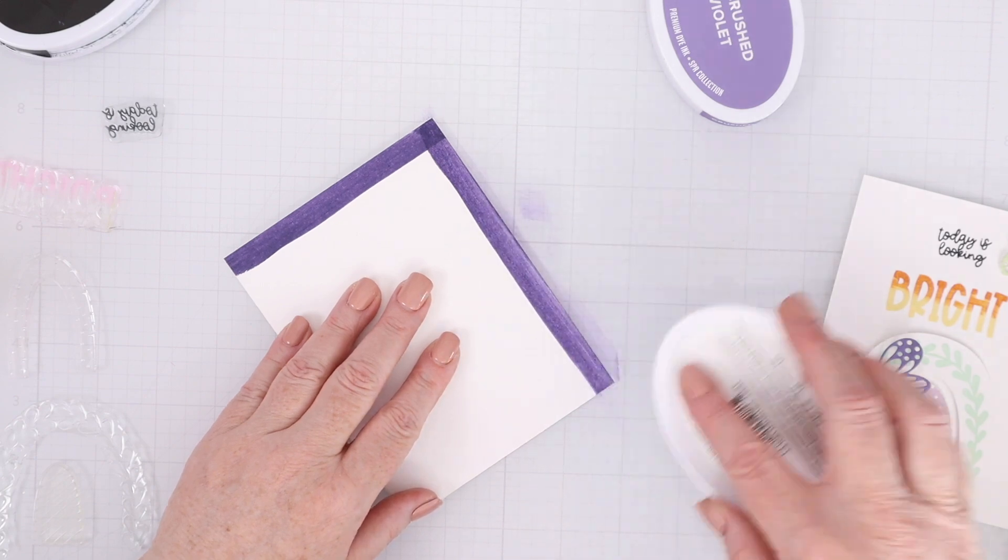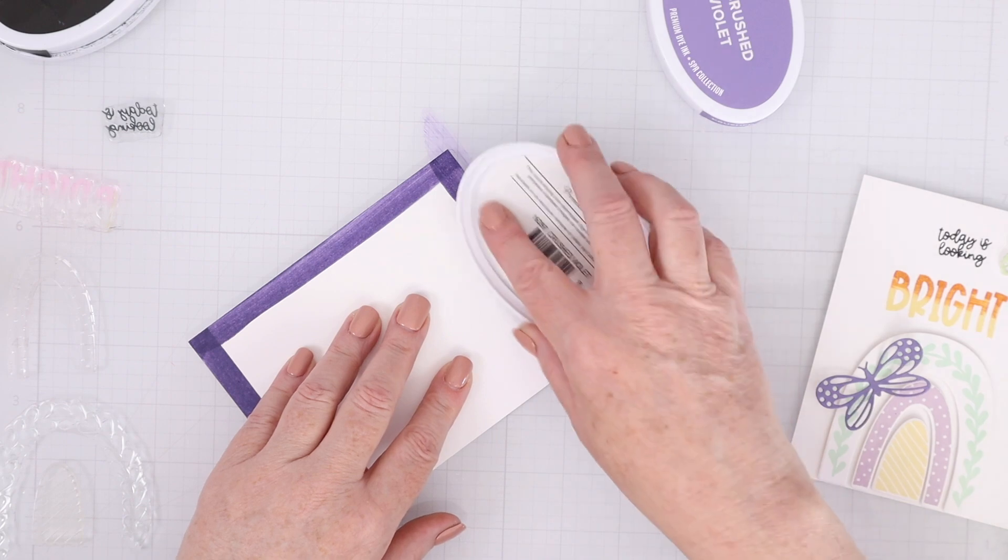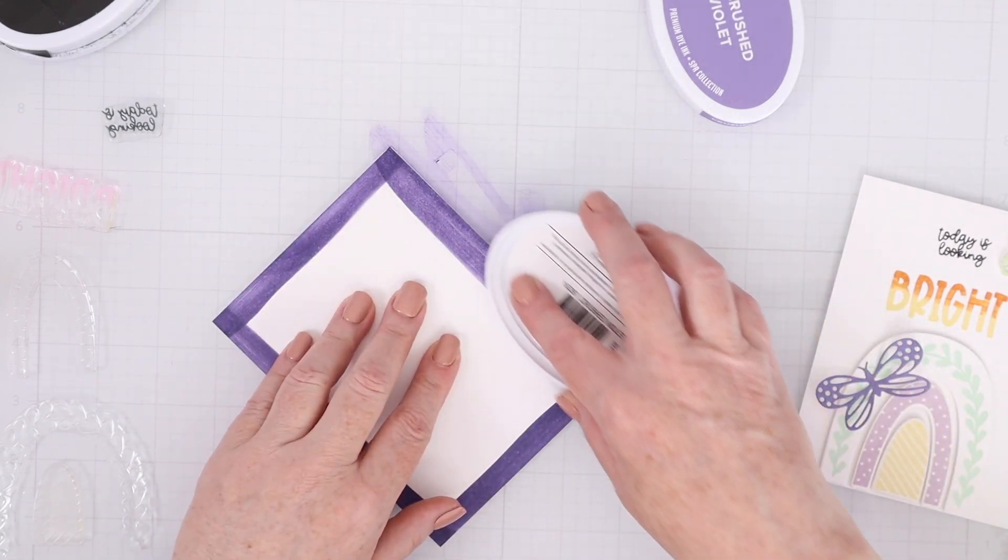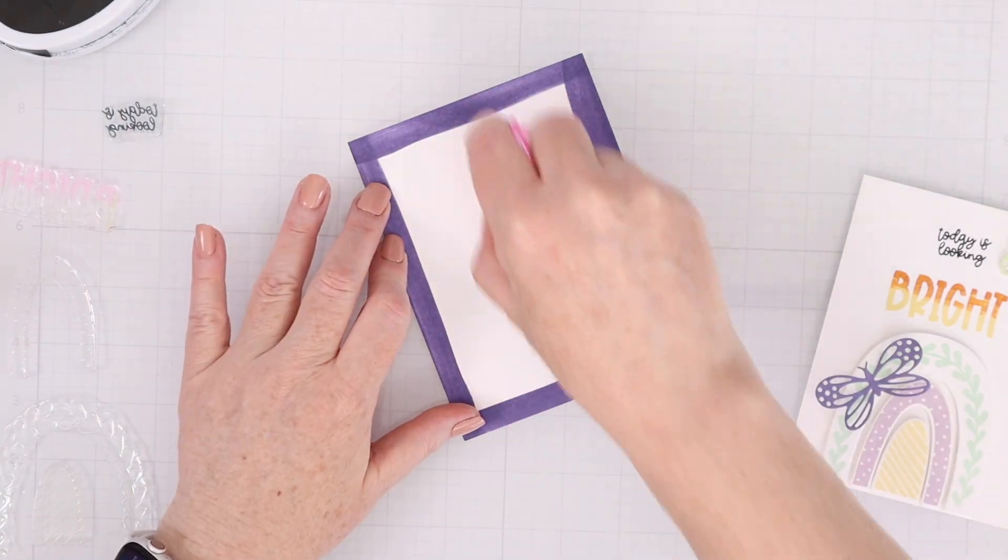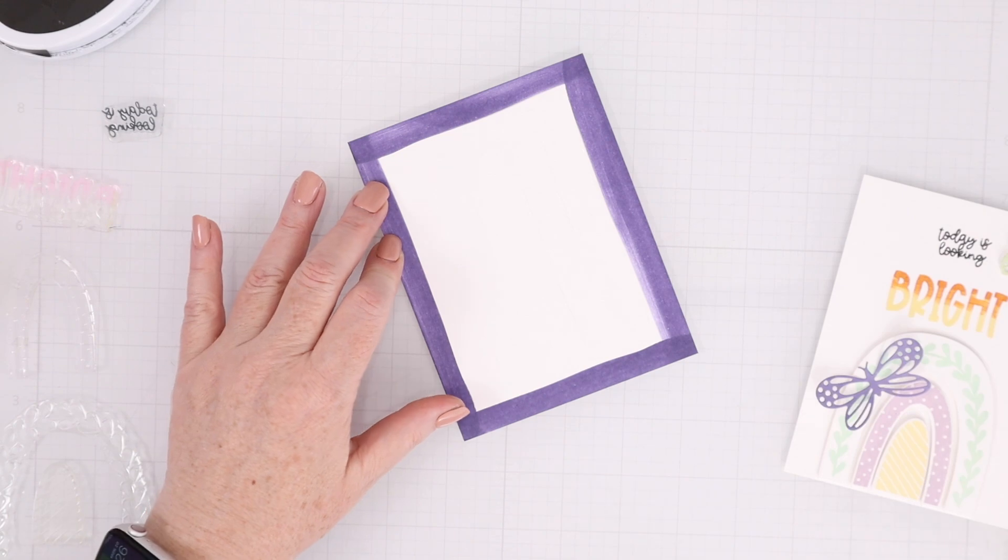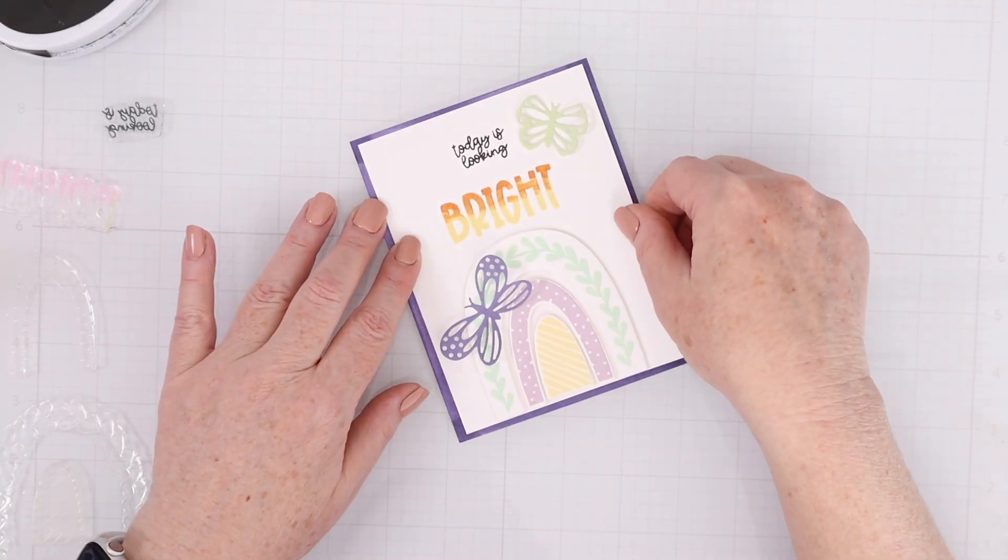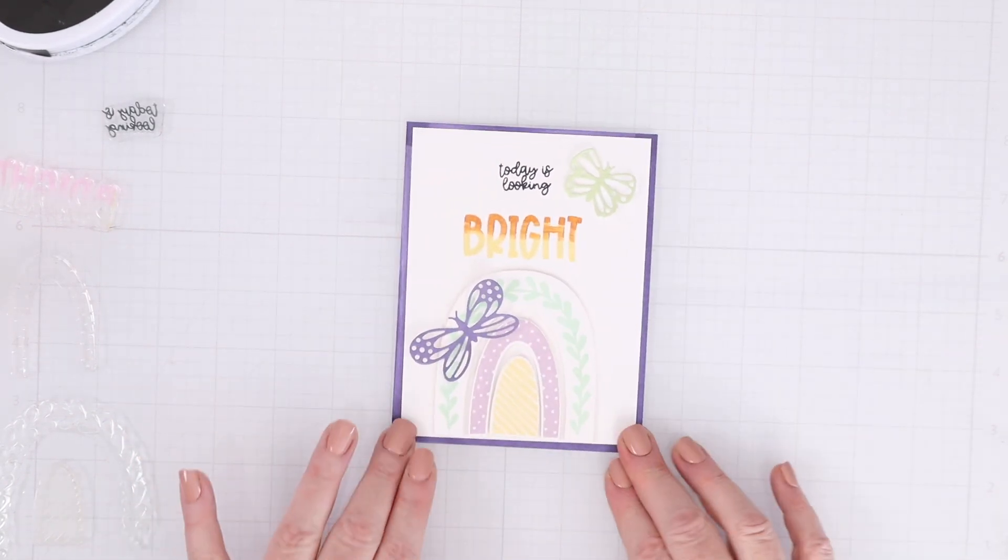Once again, I'm going to create a mat for my card panel, and so I'm using Crushed Velvet, and I'm just going to swipe along the edges. You don't need to waste all that ink by swiping along the entire cardstock if you're going to mat a 4 by 5.25 on an A2 background there. So all you need is a little stripe around all of the edges, and that again just a great way to get some matching cardstock in the background for your card.